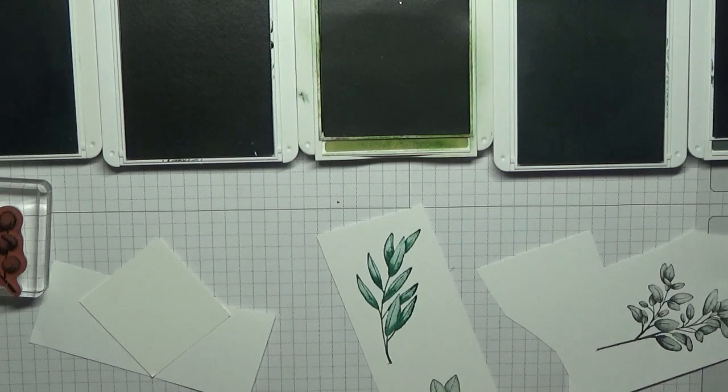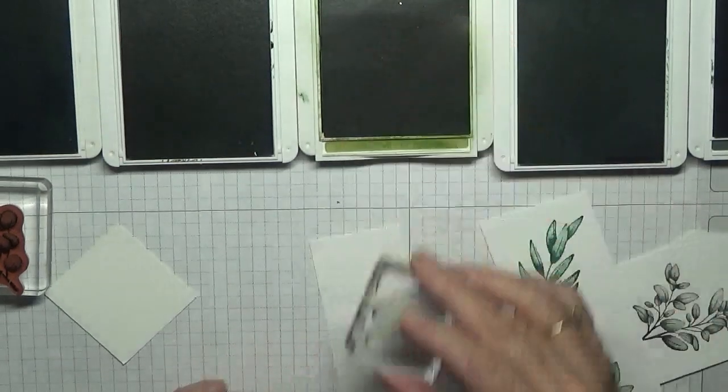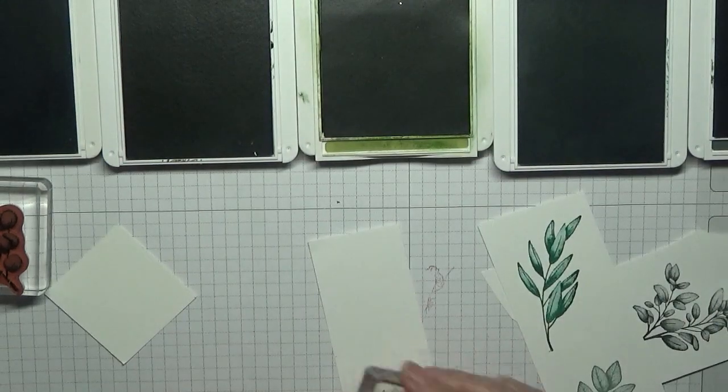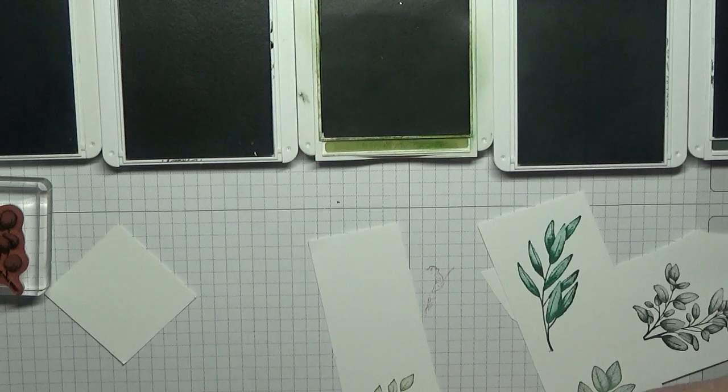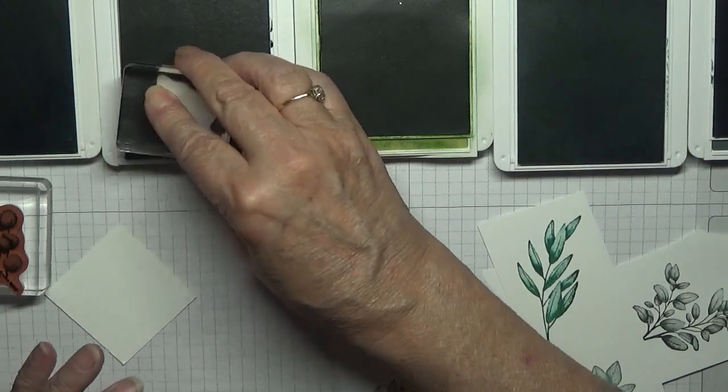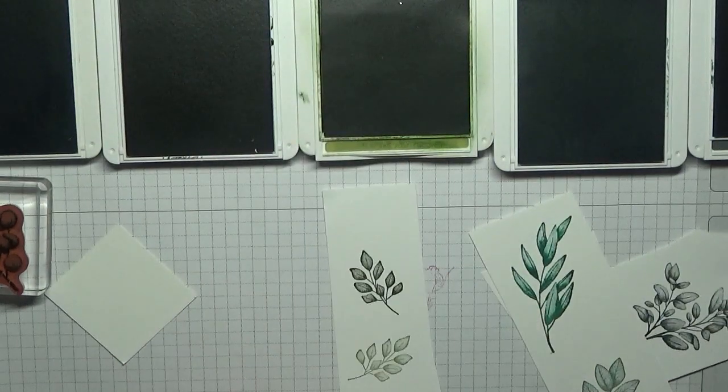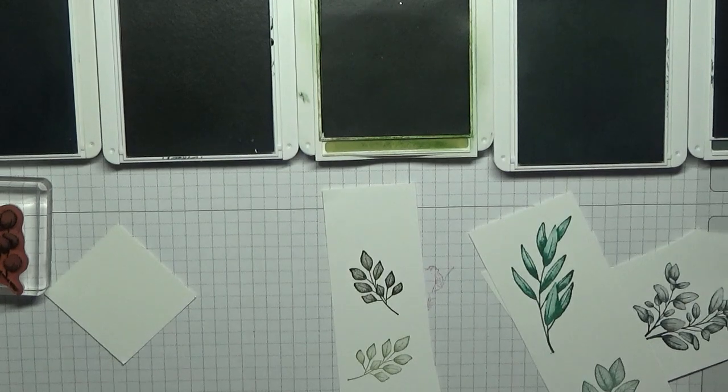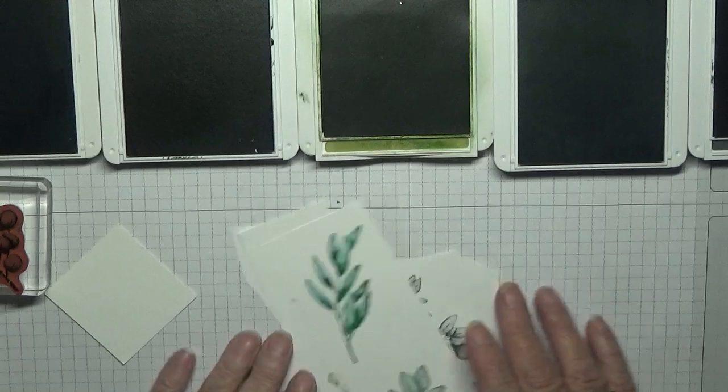Just Jade, and that one will go there. And then these little ones, one in Old Olive and one in Mossy Meadow. So we've got all different types of green going on here.